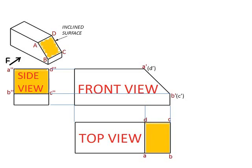As a first step, we have to draw the principal orthographic views, which we have already done. The next step is to identify the view with the inclined surface. In this case, the front view has the inclined surface. The next step is to draw projection lines perpendicular to this inclined surface.